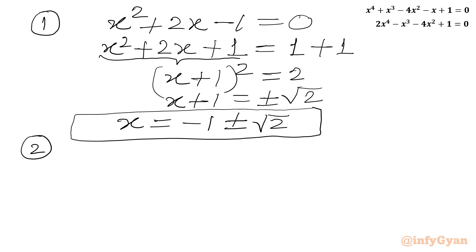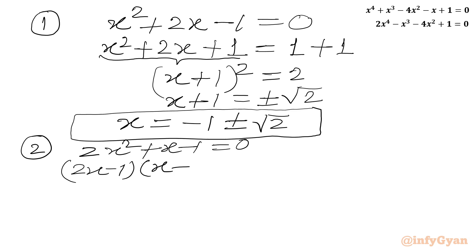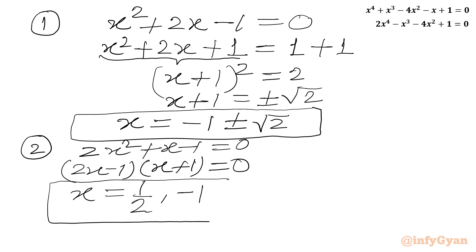For equation 2, we solve 2x² + x - 1 = 0. In factored form this is (2x - 1)(x + 1) = 0. Applying the zero product rule: x = 1/2 and x = -1. So the common roots are (1 ± √5)/2, while the other roots of equation 1 are -1 ± √2, and for equation 2 they are 1/2 and -1.